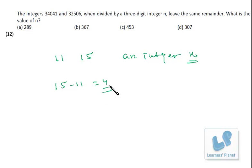Now 4 and any factor of 4 - if we divide 11 and 15 by 4 or its factor, we will get the same remainder. If 11 is divided by 4, we get remainder 3. If 15 is divided by 4, we get remainder 3.